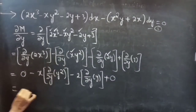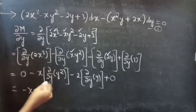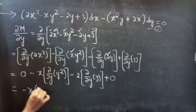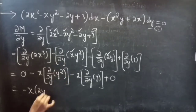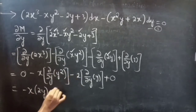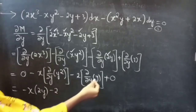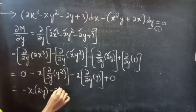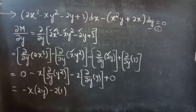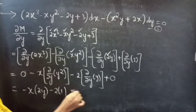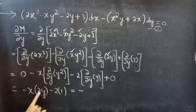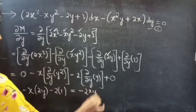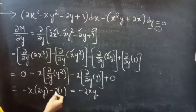The partial derivative of y² with respect to y is 2y, so we get -x · 2y, and the partial derivative of y with respect to y is 1, giving -2 · 1. Therefore ∂M/∂y = -2xy - 2.